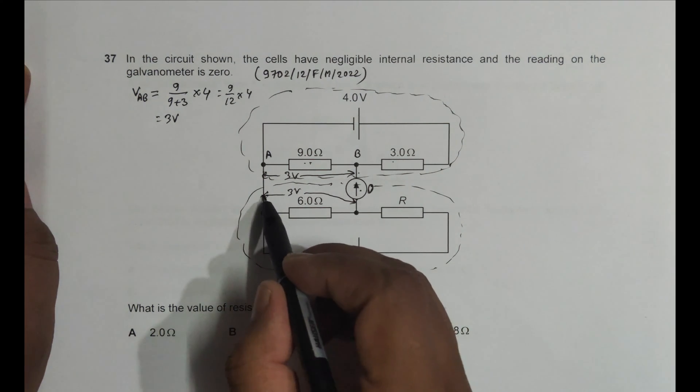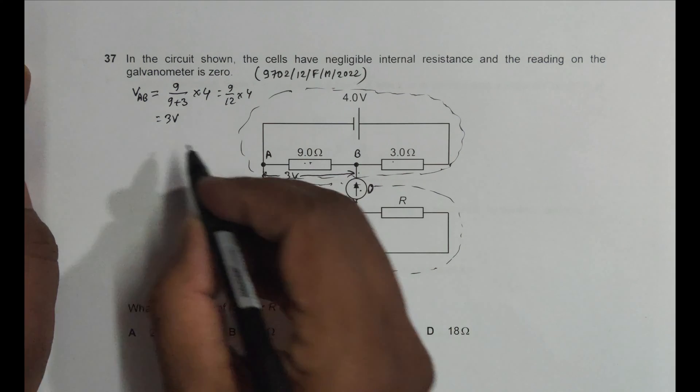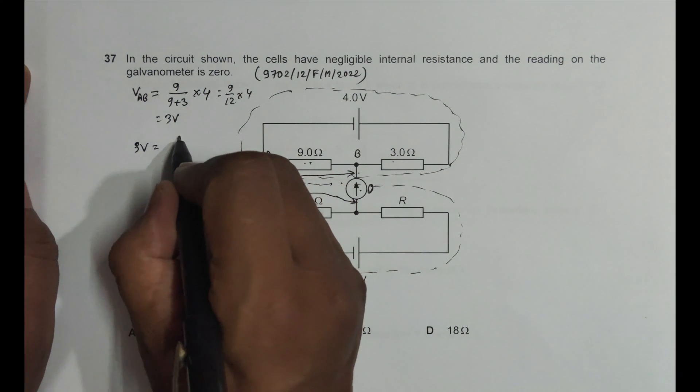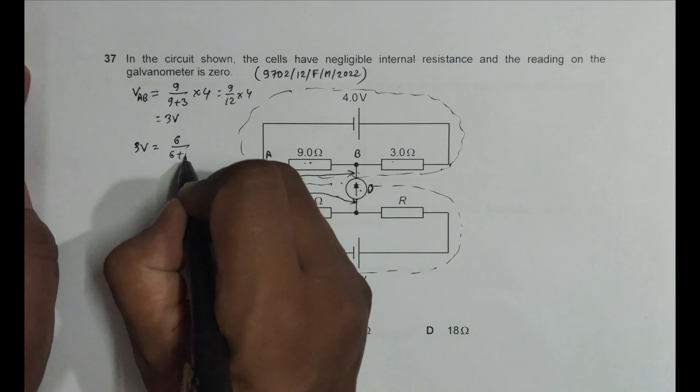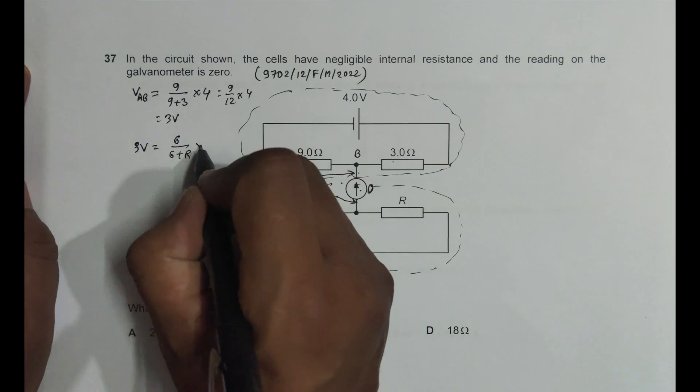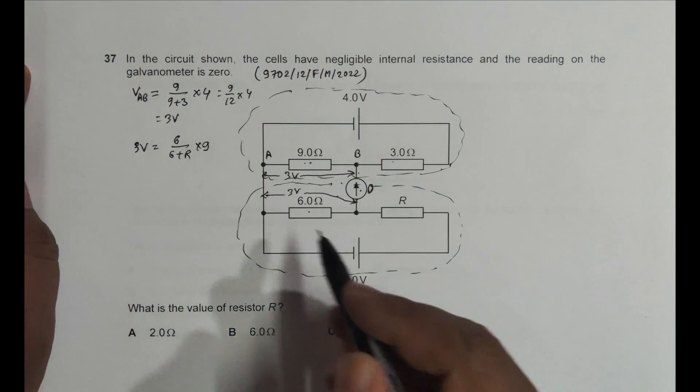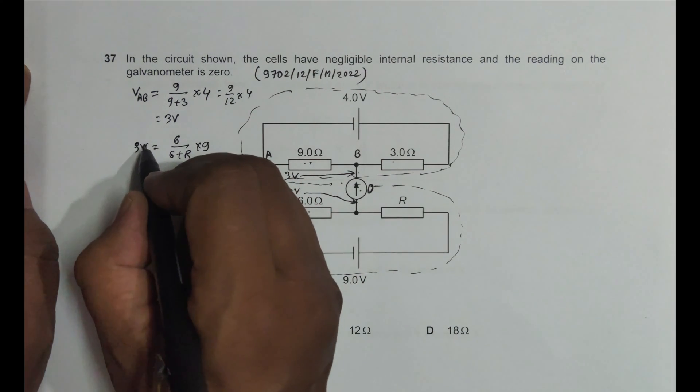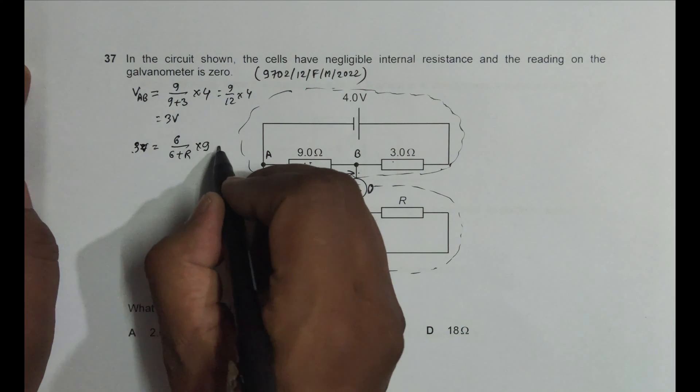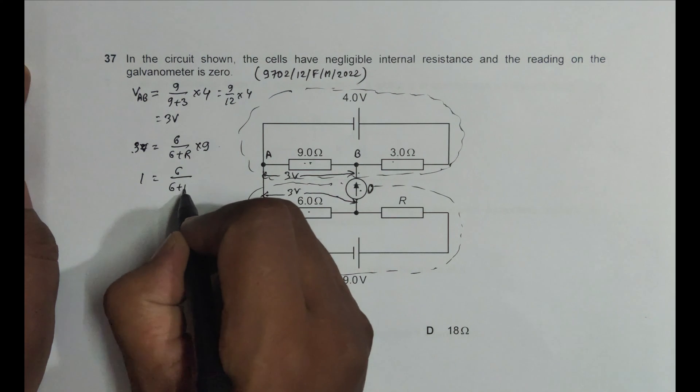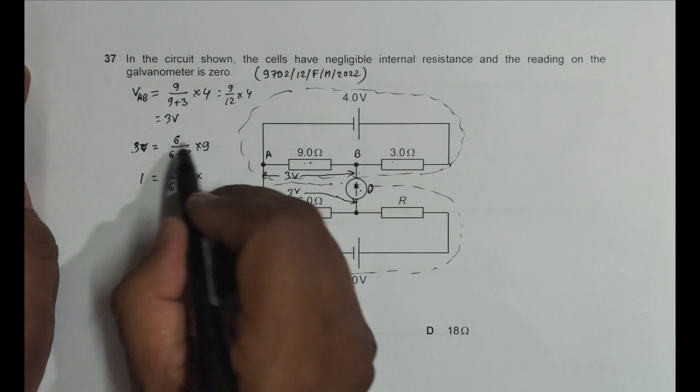So that's why this voltage should be equal to, so this 3 volt should be equal to 6 by 6 plus R and then into 9. So 6 by the total resistance into 9 should be like this. So this I can cut this here. So 3 threes are 9. So this is 1 is equal to 6 by 6 plus R into 3.